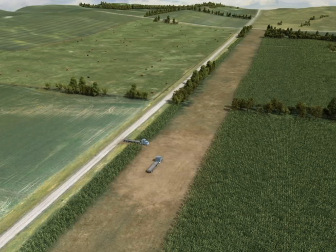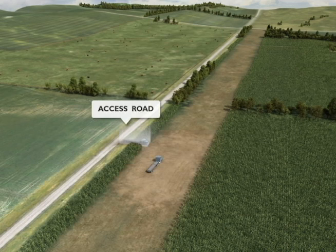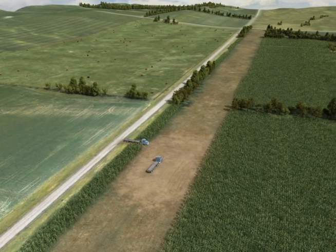In order to construct and operate the transmission line, both temporary and permanent access roads may be required. However, we expect permanent access roads through agricultural lands to be a rare occurrence. Before any road construction begins, the appropriate agency and landowners will be consulted. Whenever possible, existing access roads will be used to minimize impacts.